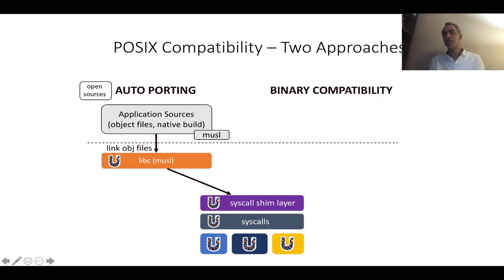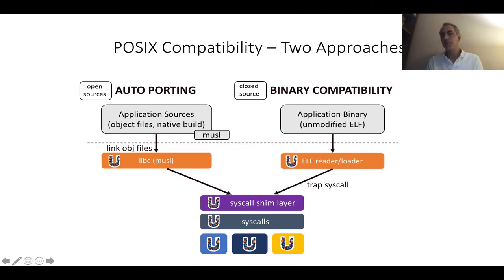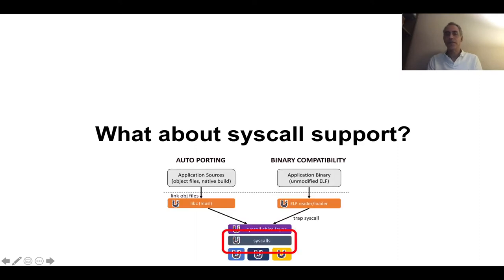We also have a mode called binary compatibility. This is for the case where we have no access to sources. Instead, we take an unmodified ELF compiled under Linux. We have a library that is essentially an ELF reader and loader, and then we trap the actual syscalls and redirect them to the syscall shim layer.